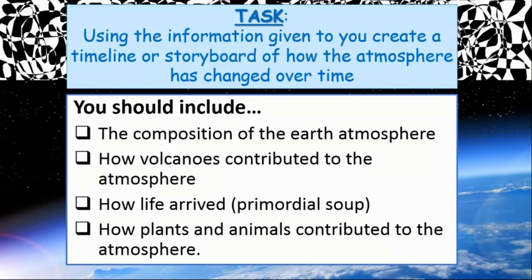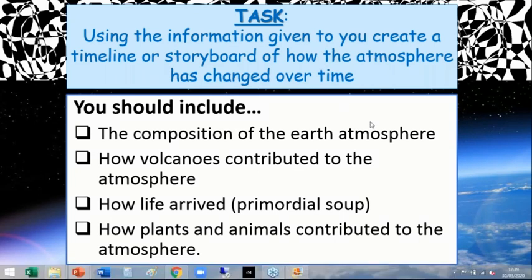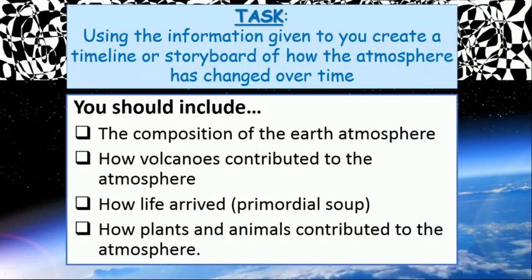So your task was using the information given to you, which was some YouTube videos, supposed to create a timeline or storyboard or PowerPoint or poster. You were supposed to make something to show how the atmosphere has changed over a period of time. What you needed to include were these few factors. So composition of the atmosphere, the percentages of gases in the air at certain points, idea of volcanoes and how they contribute to the atmosphere, the theory of primordial soup, which is an important theory, sometimes called the soup of life as well. And how plants and animals contributed to the atmosphere as well.